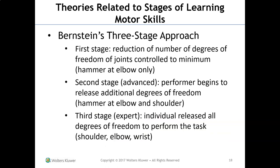Another approach is Bernstein's three-stage approach to motor learning. The first stage involves reducing the number of degrees of freedom of joints controlled to a minimum — for example, hammering at the elbow only. The second stage is advanced: the performer begins to release additional degrees of freedom, now hammering at the elbow and shoulder. In the third stage, the expert releases all degrees of freedom — now hammering using the shoulder, elbow, and wrist.